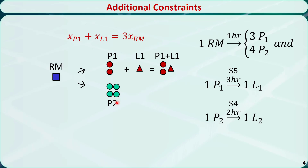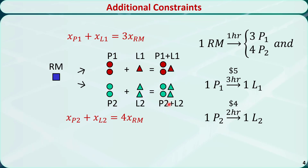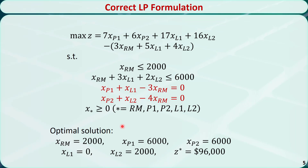Similarly, if we decide to further process two units of product 2, we get two units of luxury product 2, but the sum of product 2 and luxury product 2 is still 4 times the raw material. Therefore, we need these two balance constraints. This is the complete problem formulation.